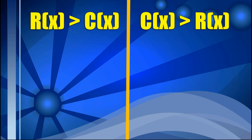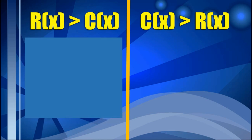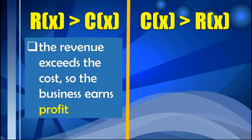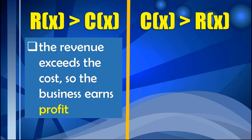In symbols, we define profit as R(x) is greater than C(x), and we define loss as C(x) is greater than R(x). This means if the revenue exceeds the cost, the business earns profit. But when the cost of production exceeds the revenue, the business is at loss.